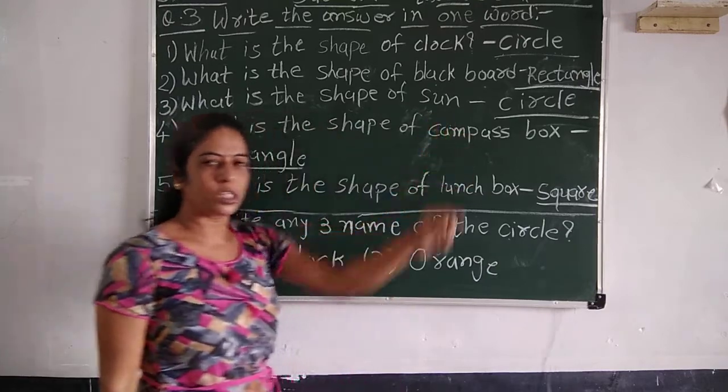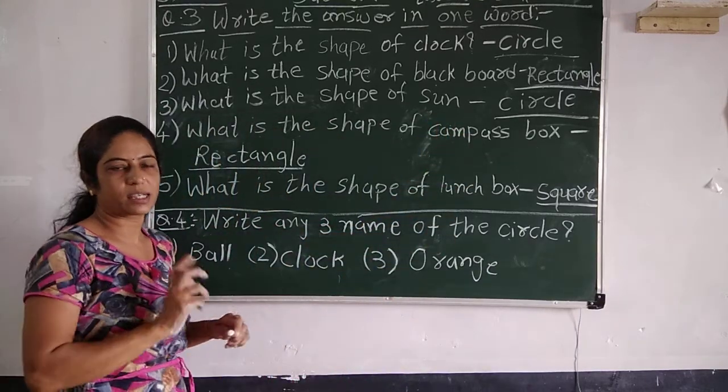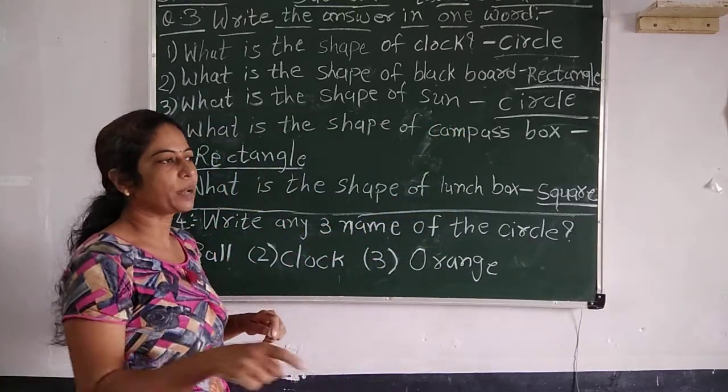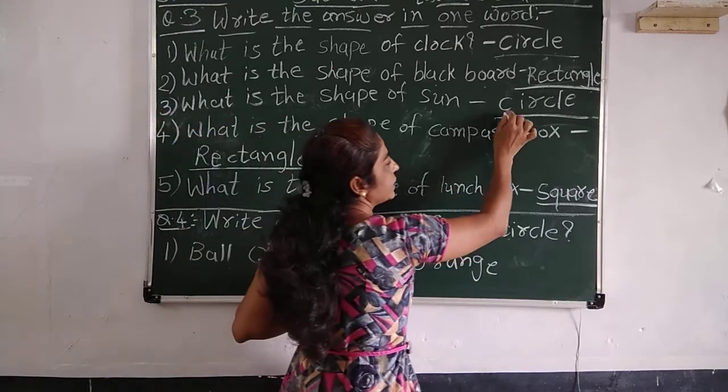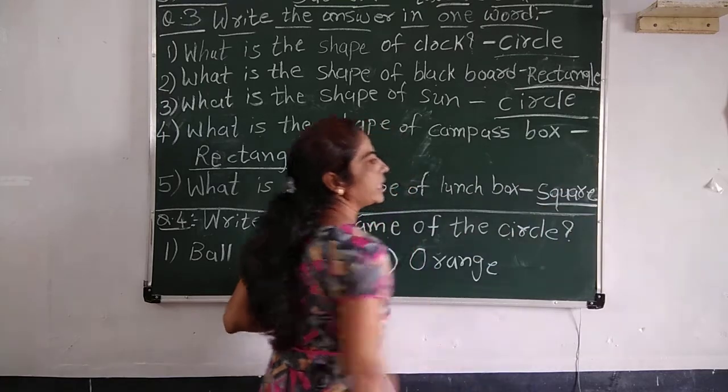The third question is what is the shape of sun? The shape of sun is circle. It is C-I-R-C-L-E, circle.